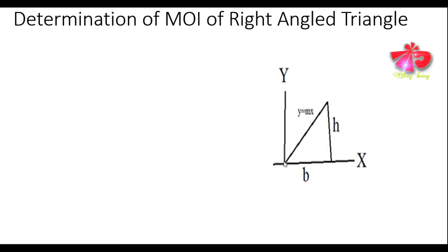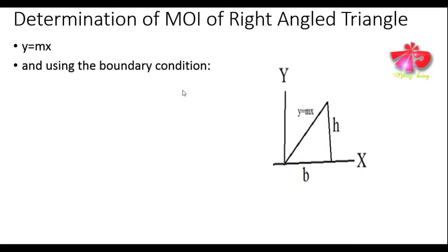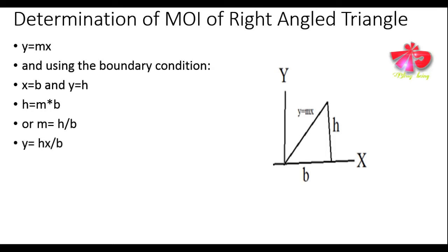This right angle triangle passes through the origin, having equation y = mx. Using boundary conditions x = b and y = h, we can easily get the value of m (slope). So the equation of the straight line can be written as y = hx/b. The area of this right angle triangle is (1/2) × base × height.